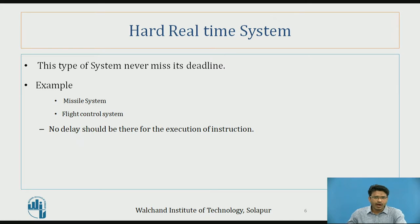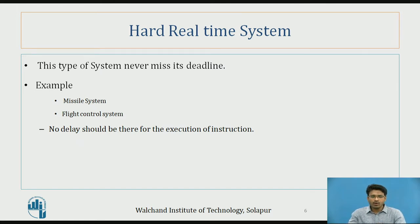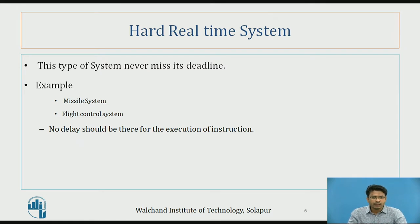The hard real-time system never misses its deadlines. Examples include the missile system and the flight control system. In a missile system, no delay or interrupt is allowed. Similarly, in a flight control system, with many flights in the air, any error could cause flights to collide. So in a hard real-time system, no delay is allowed.